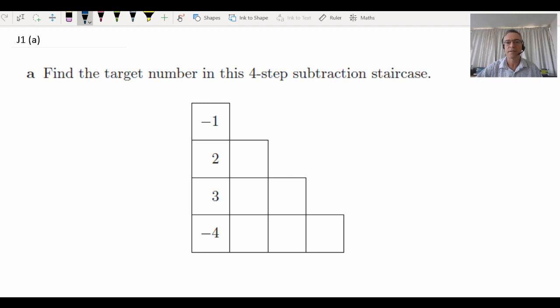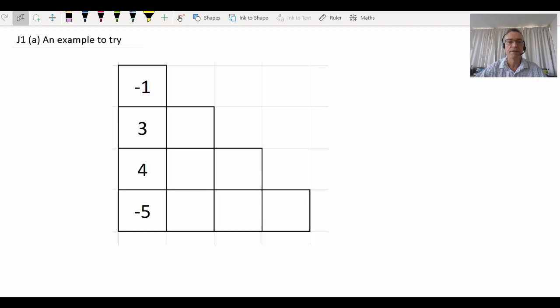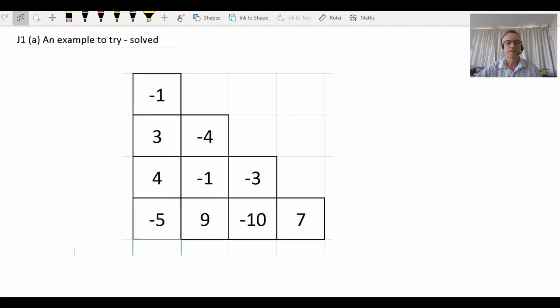Part A offers us a four-step subtraction staircase and asks us to find the target number. So really, it's asking, what is this number? I'm not going to do that problem for you, but just to make sure you're doing these correctly, I'm going to give you another problem and see if you can come up with the right answer. So here's a different one. What is the target number for this subtraction staircase? Maybe pause the video and have a go.